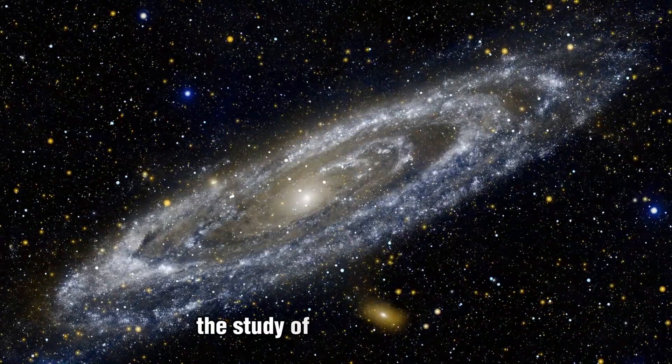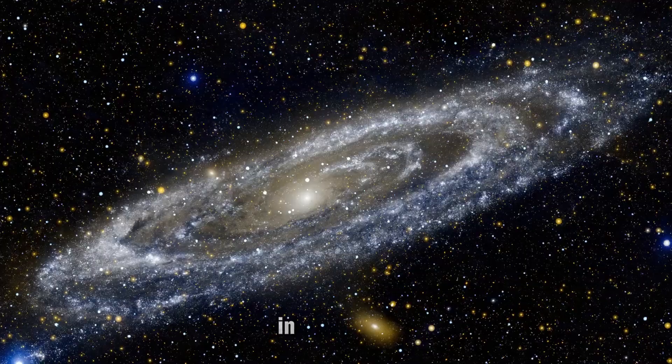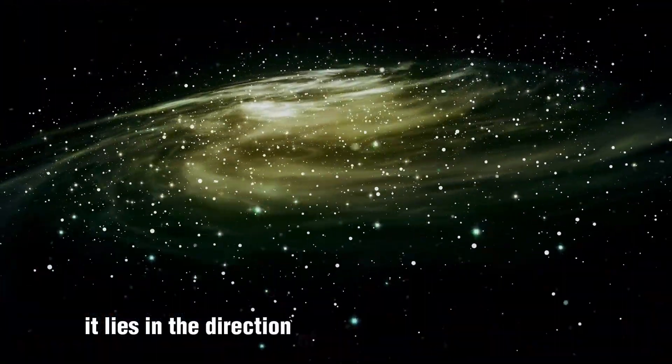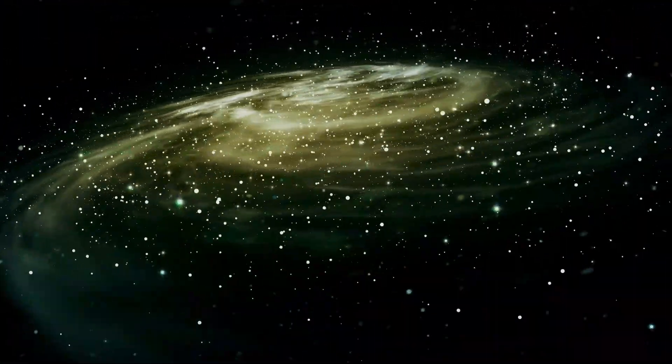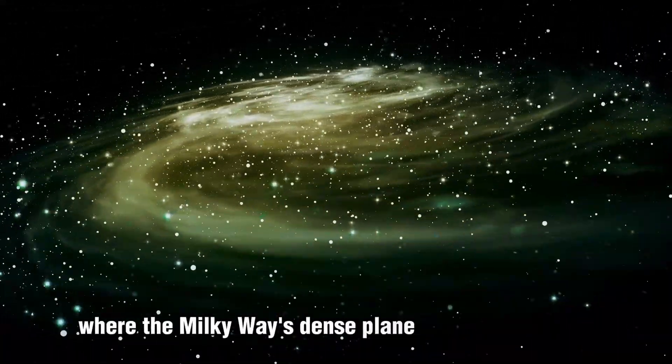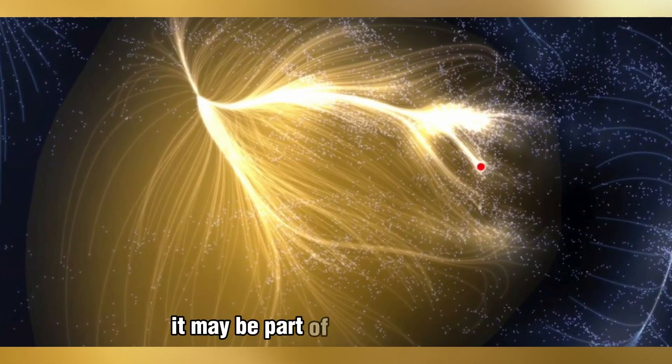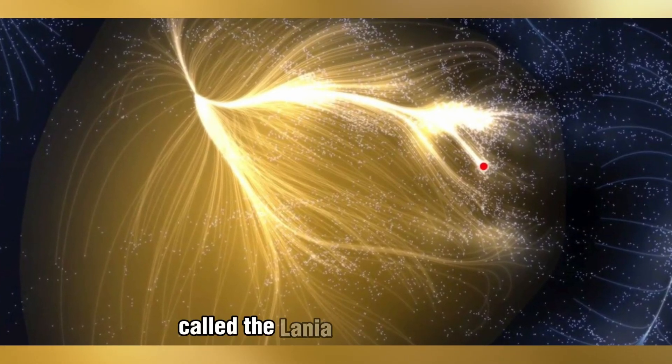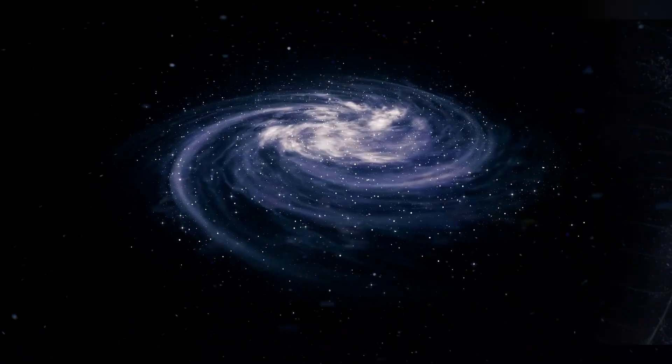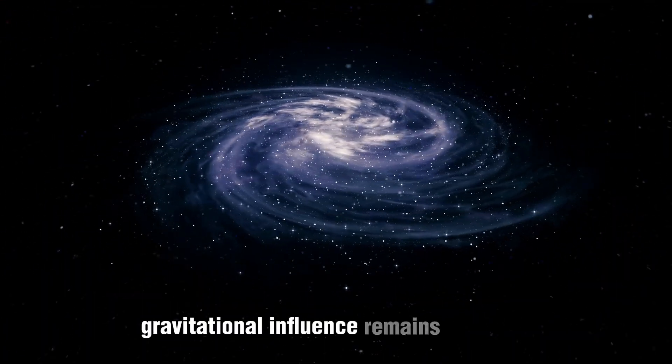The study of galactic motions led to the discovery of the Great Attractor in the 1970s. It lies in the direction of the constellation Centaurus, behind the Zone of Avoidance, where the Milky Way's dense plane obscures our view. Some scientists believe it may be part of a larger structure called the Laniakea supercluster, but the exact cause of its immense gravitational influence remains unknown.